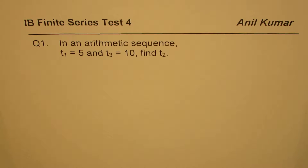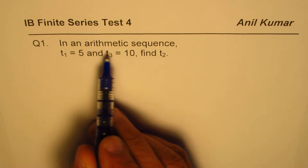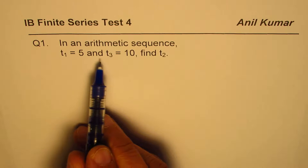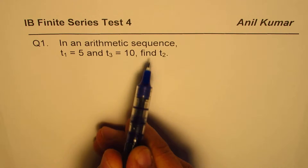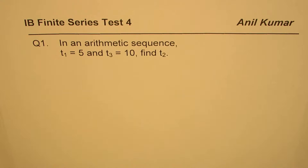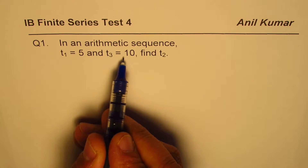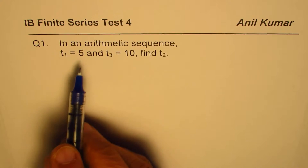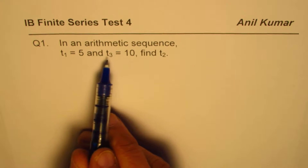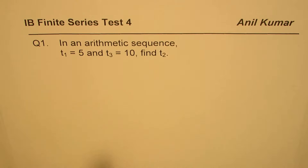I'm Anil Kumar. In this video we'll review a few concepts about arithmetic sequences and prepare ourselves for the test. The question here is: in an arithmetic sequence, t1 equals 5 and t3 equals 10, find t2. We are given the first term and the third term, and we have to find the second term, which we can do by finding the common difference.